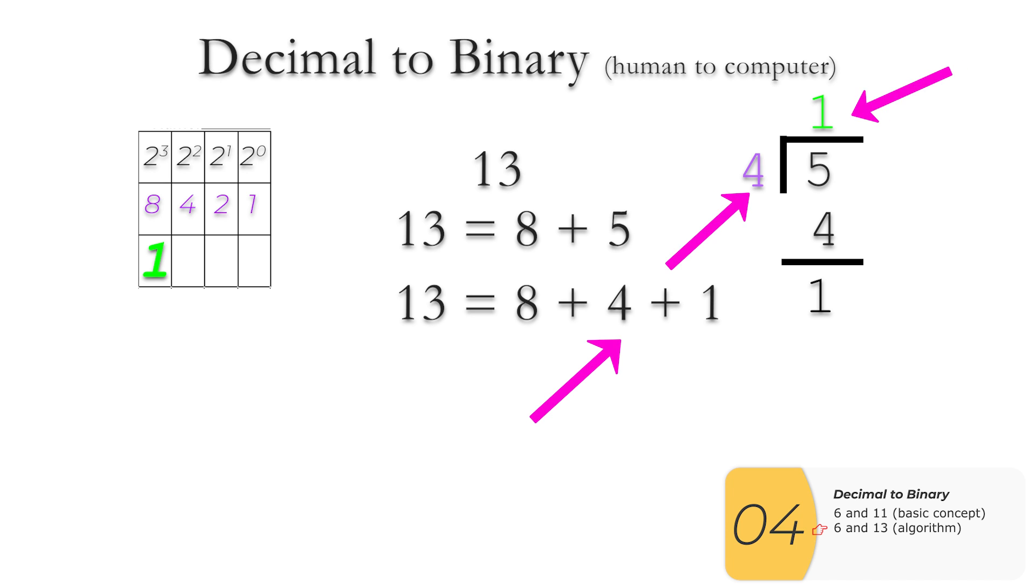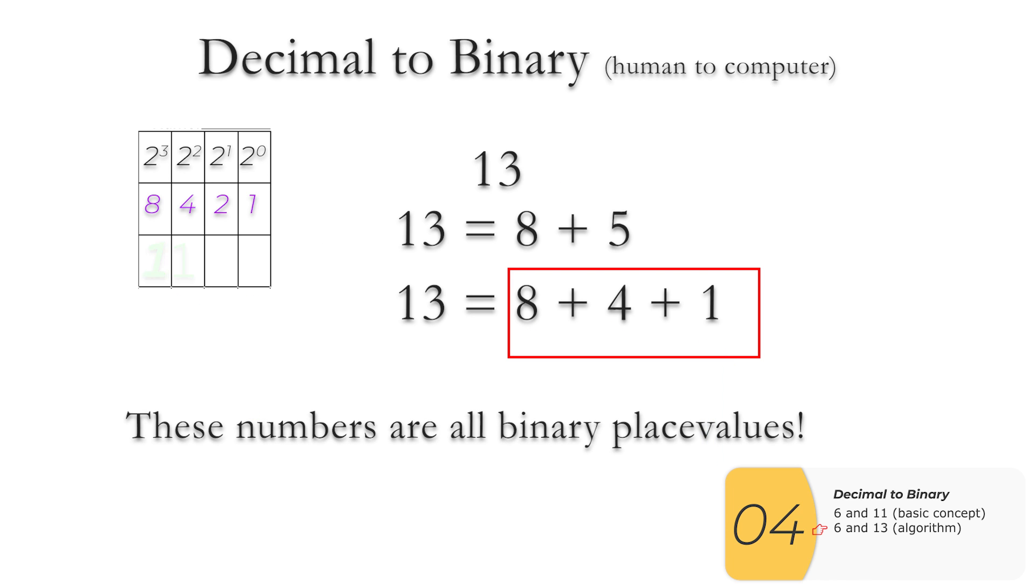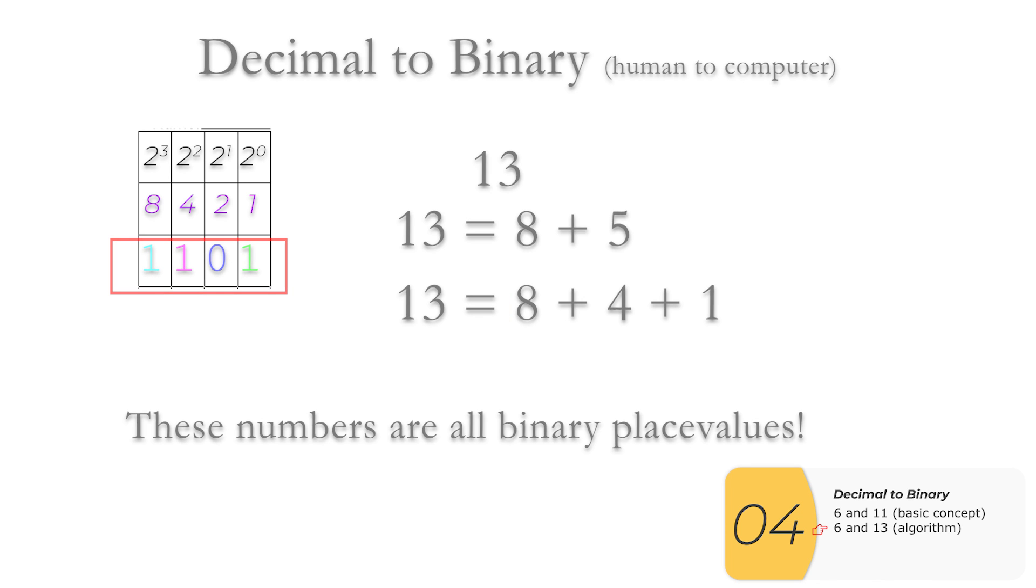Again, the 4 comes from 1 times 4, and the 1 comes from the remainder. So this means our 4 bit is turned on. But truthfully, at that point, we're done. We can recognize that 8, 4, and 1 are all binary place values in the table. So we know that's what our answer is. 1, 1, 0, 1. And that's all good. And that is what you need to know for the AP exam.